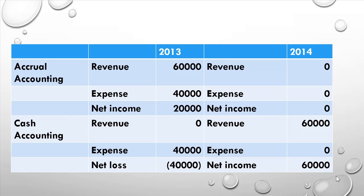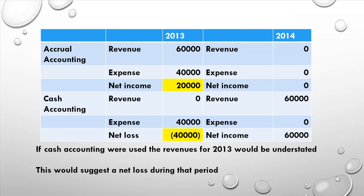Under cash accounting in 2013, we would record revenue of zero and an expense of $40,000, suggesting a net loss of $40,000. In 2014 under accrual accounting, there would be no net income or expense from this transaction, since it was recorded in 2013. But under cash accounting, we'd record revenue of $60,000 and expense of zero, suggesting a net income of $60,000. So accrual accounting shows a net income of $20,000 in 2013, while cash accounting shows a net loss of $40,000.